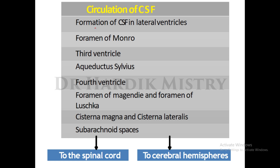Circulation of CSF: once formed, CSF flows from the lateral ventricles through the foramen of Monroe to the third ventricle, then through the aqueduct of Sylvius to the fourth ventricle, through the foramen of Magendie and foramen of Luschka into the cisterna magna and cisterna lateralis. From there it enters the subarachnoid space and flows to the cerebral hemispheres as well as the spinal cord.